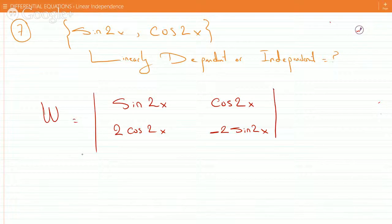And we find the determinant of this, and the way we evaluate determinant is by criss-cross. So it'll be negative, so this times this, so negative 2 sine squared 2x minus 2 cosine squared 2x.